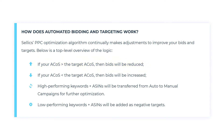Similarly, the second area: if your ACoS is below the target ACoS, then the bids will be increased. If our target ACoS is 30% but our current ACoS is only 20%, it shows us that there are potential growth opportunities with our sales if we were to increase our bids and therefore gain more impressions and more sales. So what we want to do is increase our bids, and that's what this automation is going to do for us.